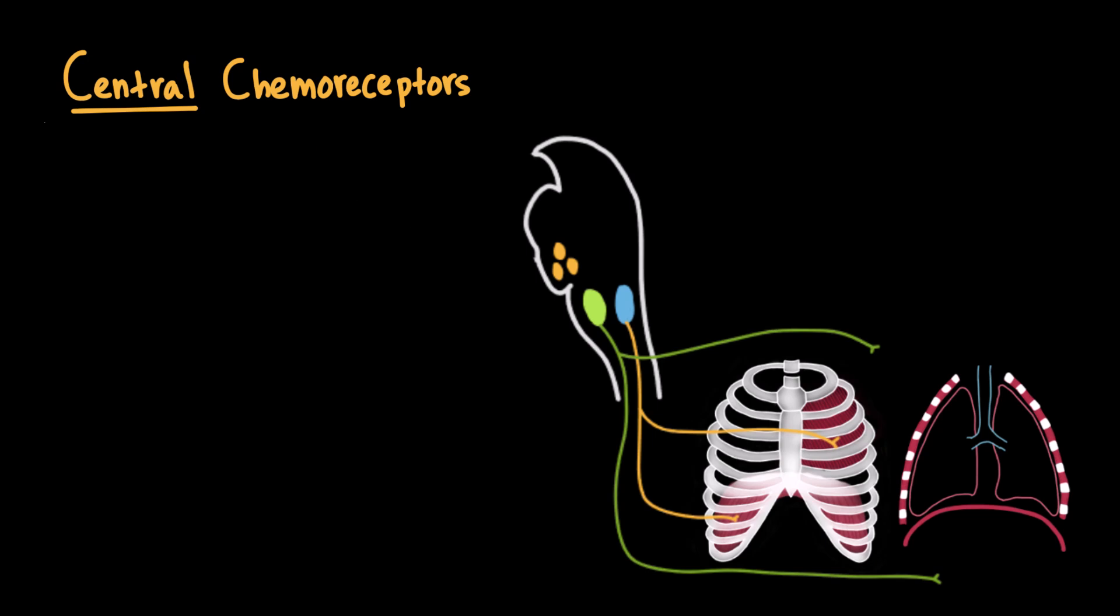We have two main types of chemoreceptors. First, we have central chemoreceptors that are located in the brainstem, specifically in the medulla near the cerebrospinal fluid, or CSF. They detect changes in the pH of the CSF, which reflects the amount of CO2 in the blood. So, when blood CO2 levels rise,